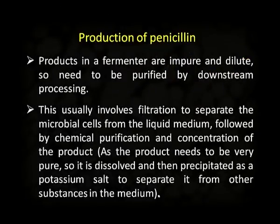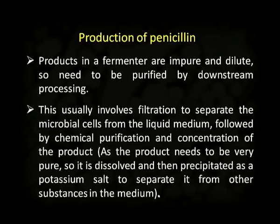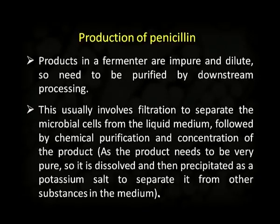In downstream processing, the products in a fermenter are impure and dilute, so they need to be purified. This usually involves filtration to separate the microbial cells from the liquid medium, followed by chemical purification and concentration of the final product. As the product needs to be very pure, it is dissolved and then precipitated as sodium salt or potassium salt to separate it from other substances in the medium.